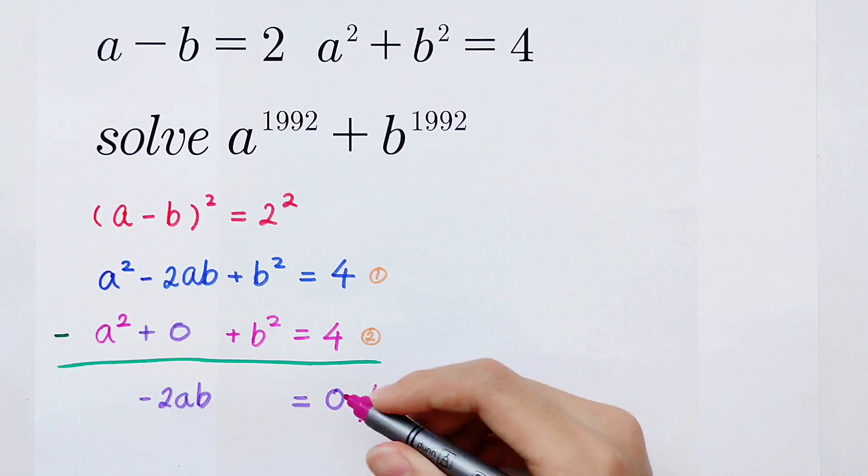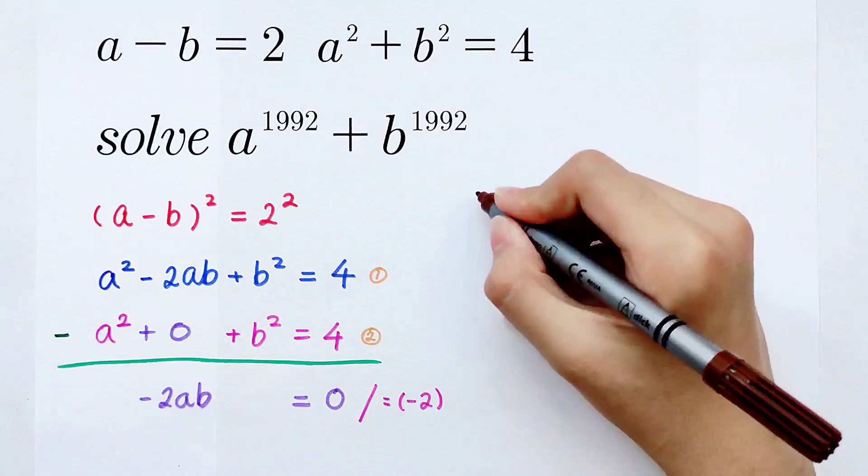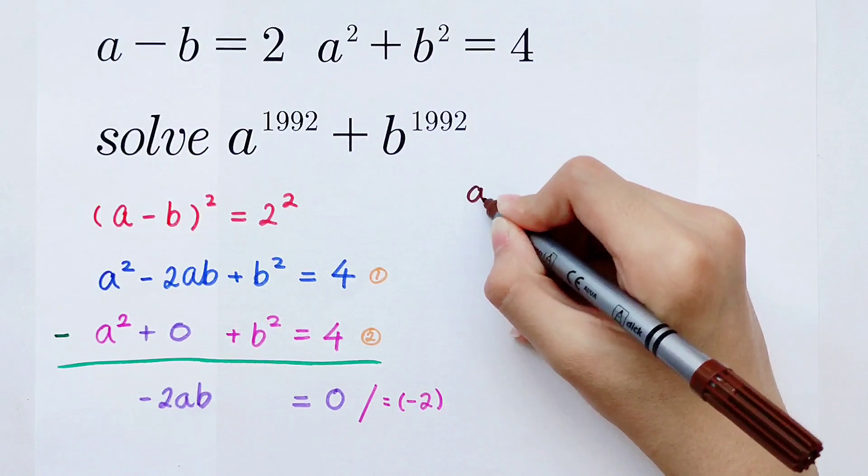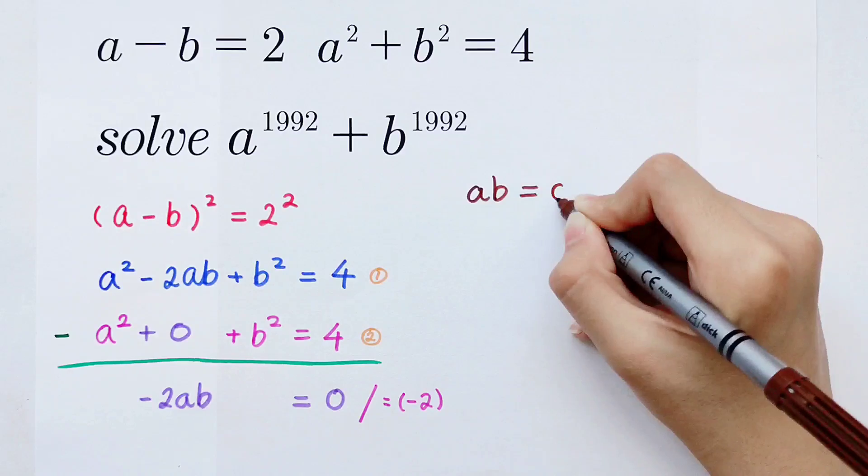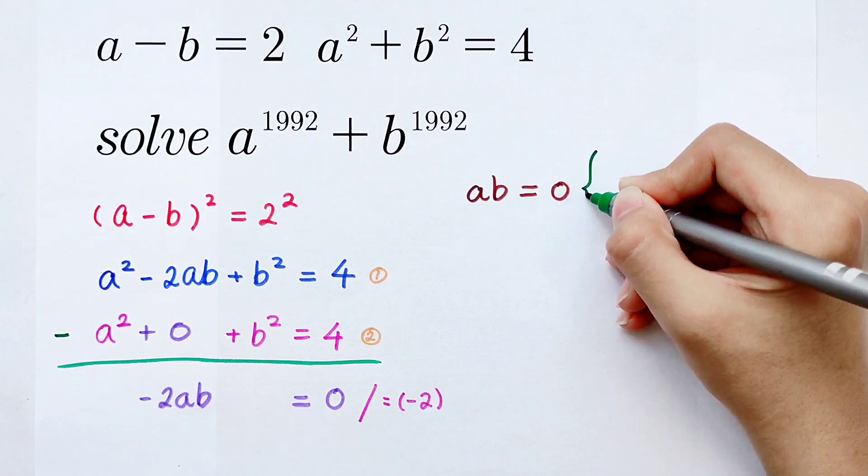From this, we divide by minus 2 on both sides and we can get a times b is 0. If a times b is 0, there are 3 cases.